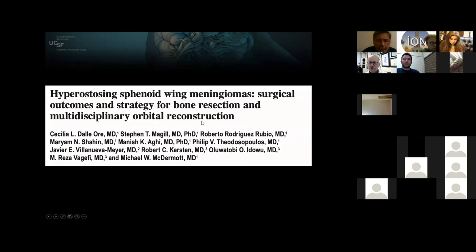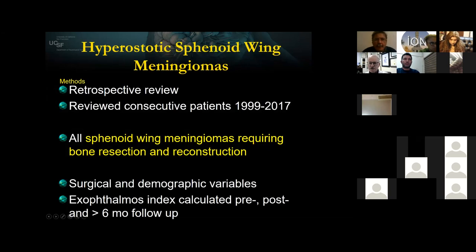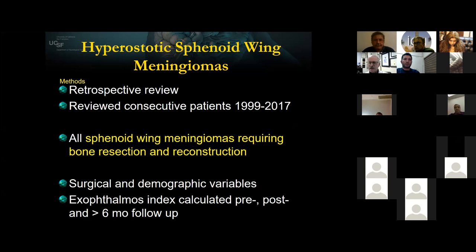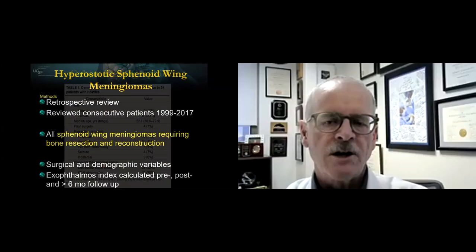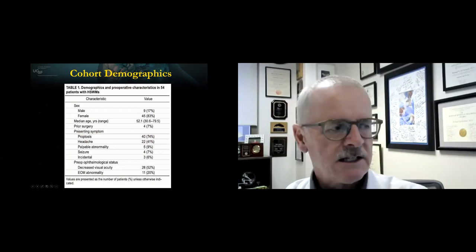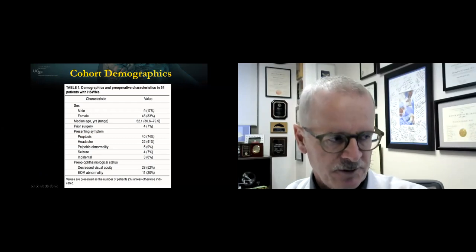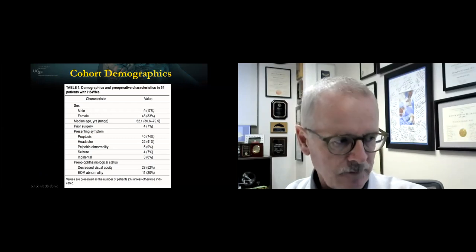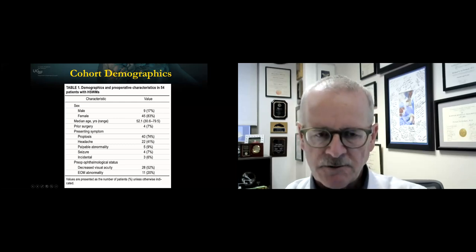It was a retrospective review in the digital imaging era — in 1999 we went to digital imaging, and all films prior to 1999 were destroyed, so patients before 1999 were excluded. We looked at all these meningiomas and calculated the pre-, early, and late post-operative exophthalmos ratio. Demographics as predicted: 83% female, typically middle-aged, 74% with proptosis, 41% with headaches, and 52% had reduced visual acuity. That's another reason to involve your oculoplastic surgeons, as they'll do the Humphrey visual field assessment to look for compressive optic neuropathy.